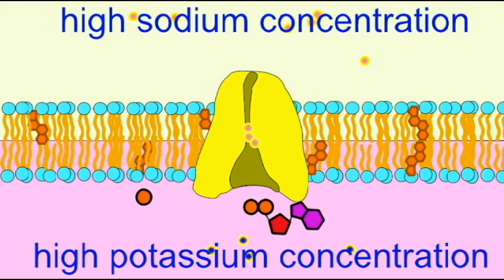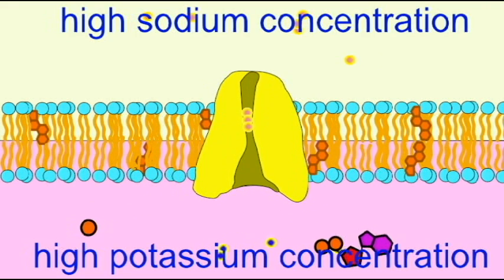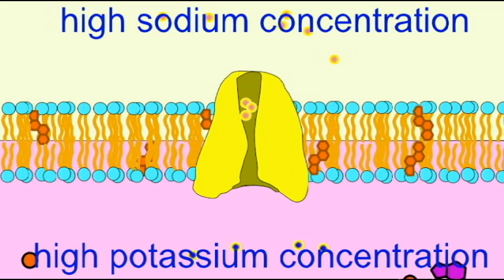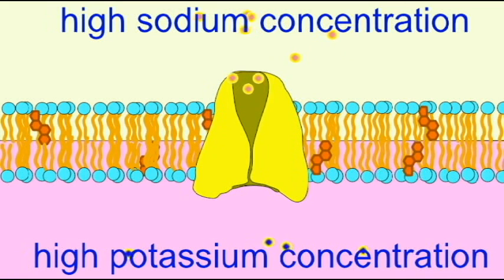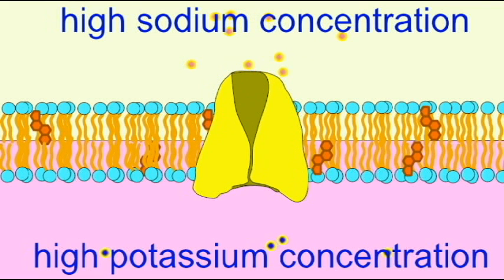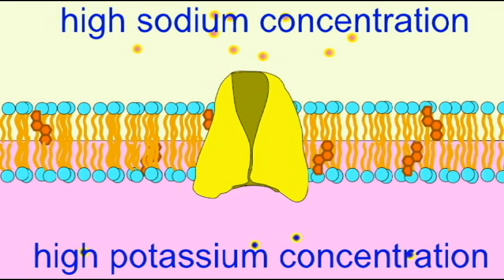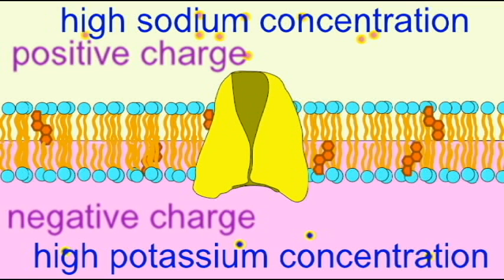However, since three positive sodium ions leave for every two positive potassium ions which enter, the net result of this protein's action is that there are more positive charges leaving the cell than there are positive charges coming into the cell.